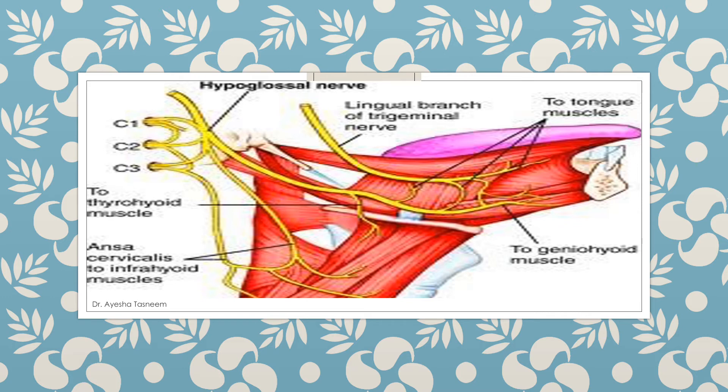In the upper part of its course, the hypoglossal nerve is joined by fibers of C1 from the cervical plexus. The hypoglossal nerve thus controls the movement as well as the shape of the tongue. Here you can see how the fibers of C1 travel with the hypoglossal nerve as it passes over the mylohyoid, supplying all intrinsic and extrinsic muscles of the tongue except the palatoglossus.